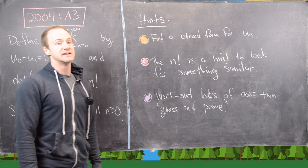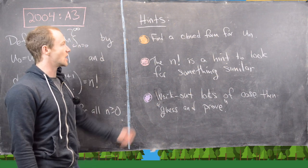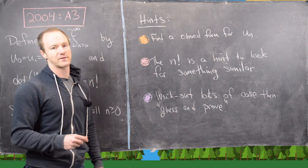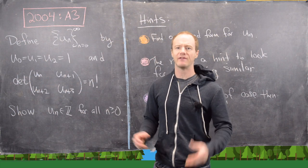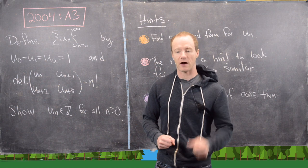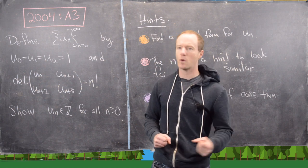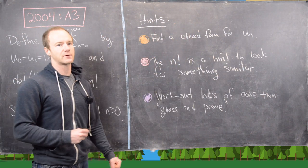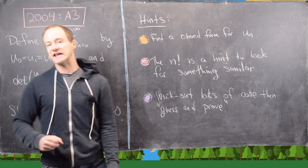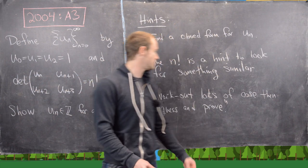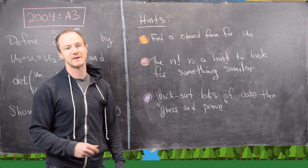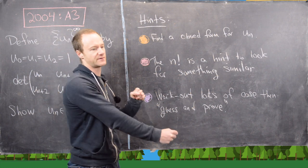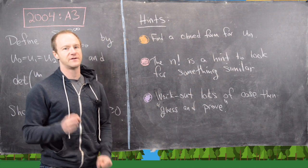Let's look at some hints, and I'll give you some time to work on this — maybe pause the video and give it a go. There are three major hints. The first one: we want to find a closed form for u_n. You can either find a recursion that recursively proves it's an integer, or find a closed form. Finding a closed form is just as easy, and if you've got a closed form you know immediately it's an integer. The next hint is built into the structure of the problem: n factorial is a hint to look for something similar — a rising power, falling power, binomial coefficient, or so on.